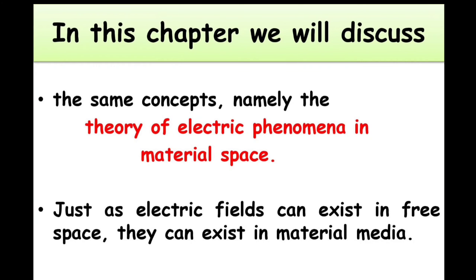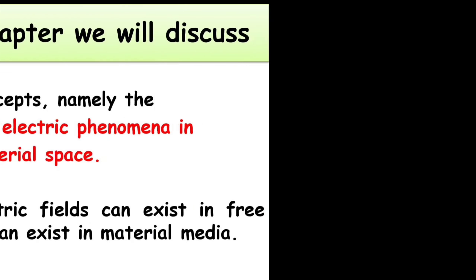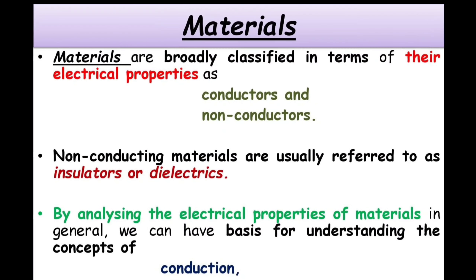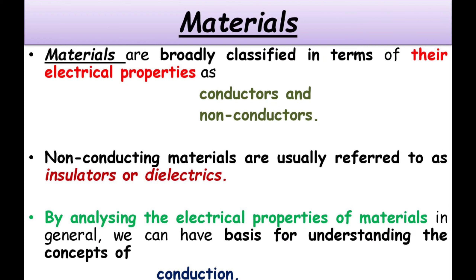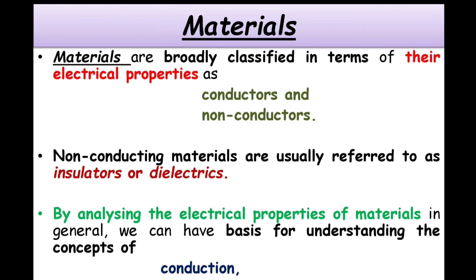Just as electric fields can exist in free space, they can exist even in material media as well. Therefore, to understand this, we first need to get clarity on what a material is and how these materials are classified. Depending on that, we will study how the behavior of electromagnetic waves takes place in those materials in the further classes.